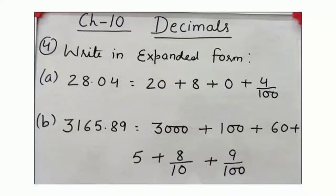Part b: 3165.89. 3165 is a whole number, so the place value is 3000 plus 100 plus 60 plus 5. And 0.89 is a decimal number. The place value of 8 will be 8 by 10, and the place value of 9 will be 9 by 100. So, expanded form is 3000 plus 100 plus 60 plus 5 plus 8 by 10 plus 9 by 100.